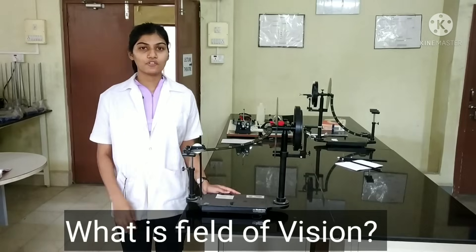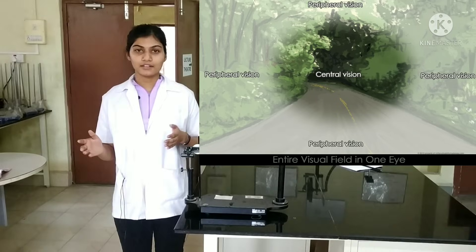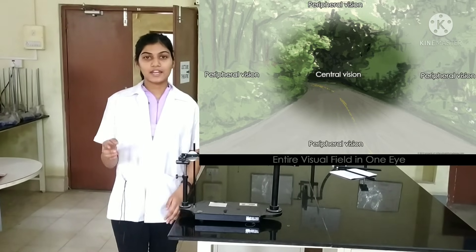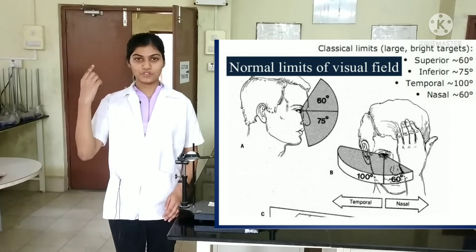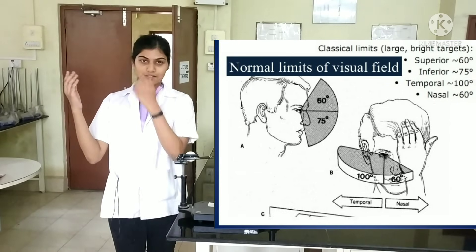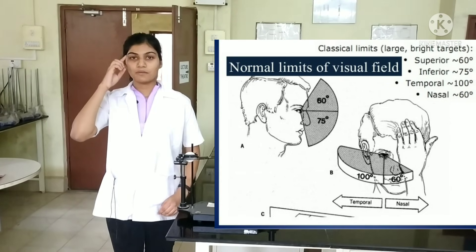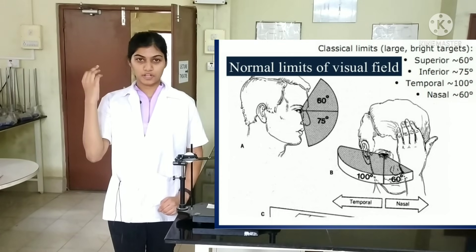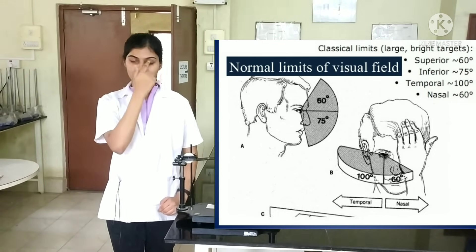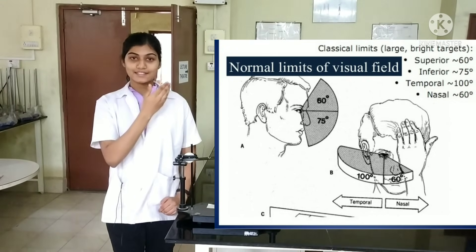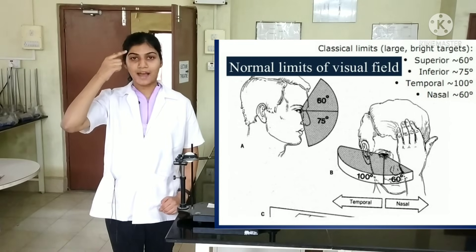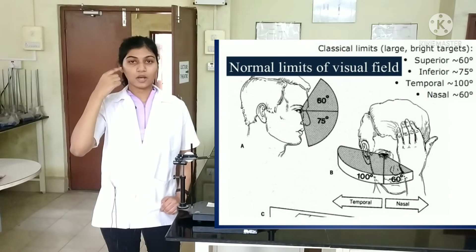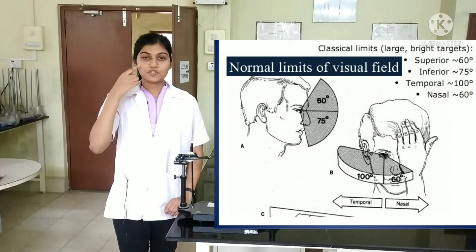Let us look at the principle. Field of vision is the part of the external world that you can see when one eye is closed and the gaze is fixed at a particular point or object. We have four fields of vision: temporal, nasal, superior, and inferior. The temporal has a field of 100 degrees because there is no anatomical obstruction. The nasal side is obstructed by the nasal bridge, giving 60 degrees. Superiorly, the supraorbital margin limits it to 55 degrees, which is the least. Inferiorly, the anatomical obstruction is the maxilla of the cheek, making it 75 degrees.